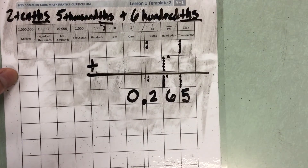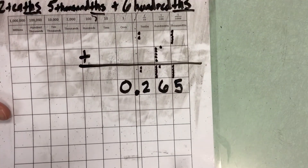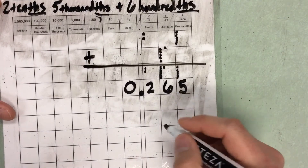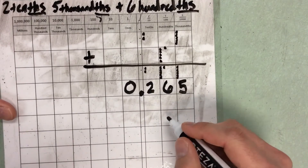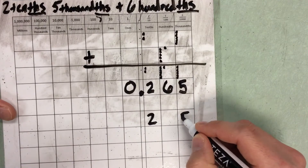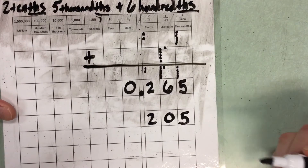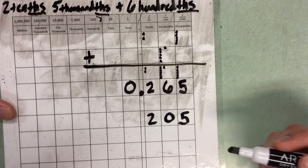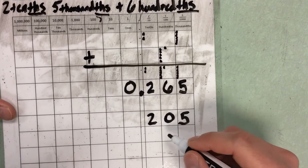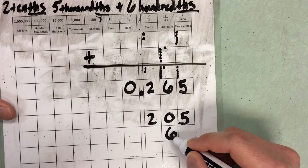Now let's see what that looks like using the standard algorithm. So if I'm adding these two numbers together, I have 2 tenths and 5 thousandths, and since we have 0 hundredths, we can use a 0 as our placeholder. And I'm going to add to that 6 hundredths — here's my hundredths column, I'm going to add a 6 here.